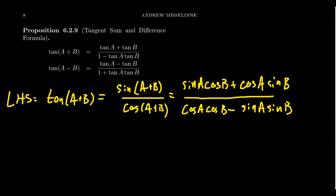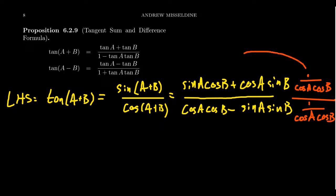What we're going to do is multiply the top and the bottom of this fraction by cosine of a cosine of b. And then we have to do that to the denominator as well — one over cosine of a cosine of b.